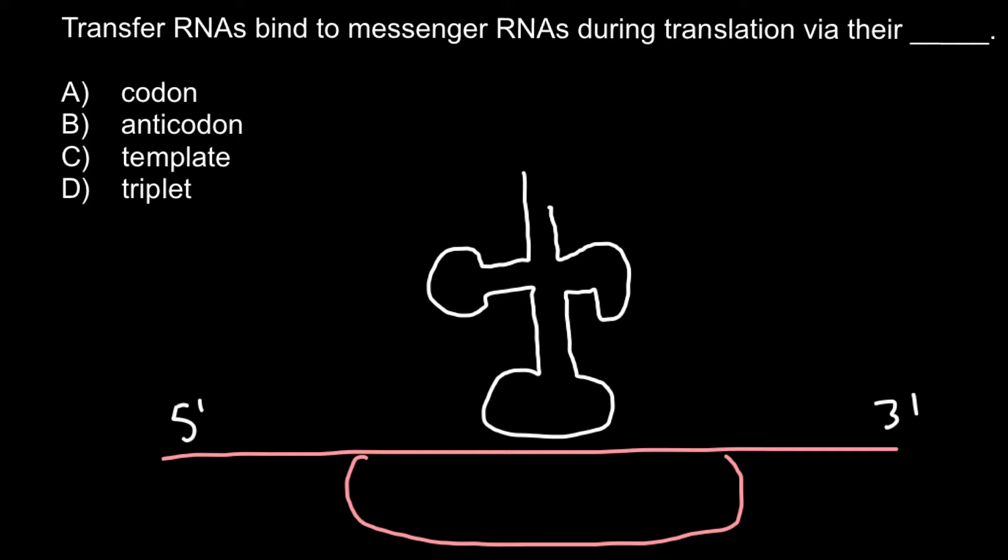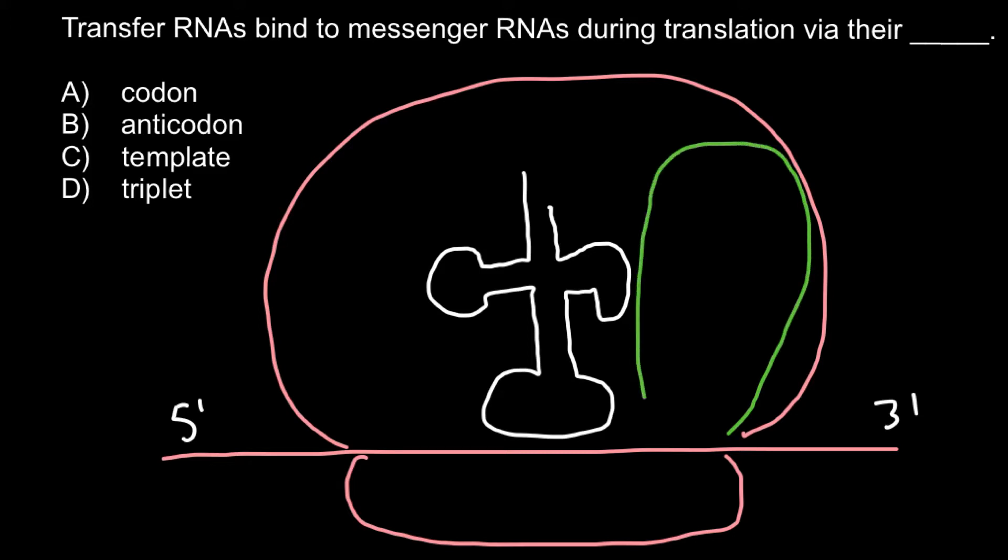Then here we would be able to find the first tRNA, transfer RNA, that looks like this. Then the large ribosome subunit would bind to this structure. In the large ribosome subunit we can find the A site, P site, and E site. This is not a mistake - the first tRNA wouldn't take the A site but would go straight to the P site.